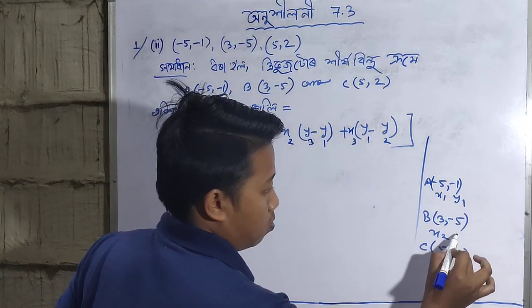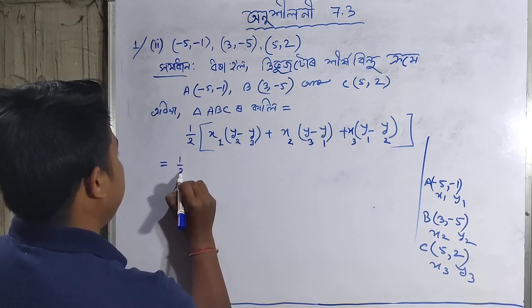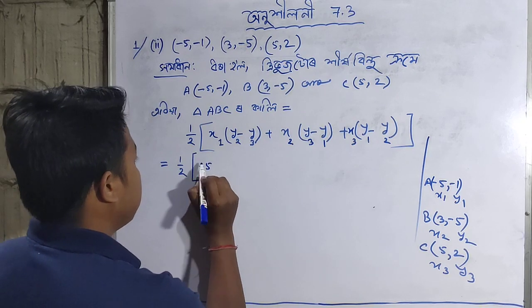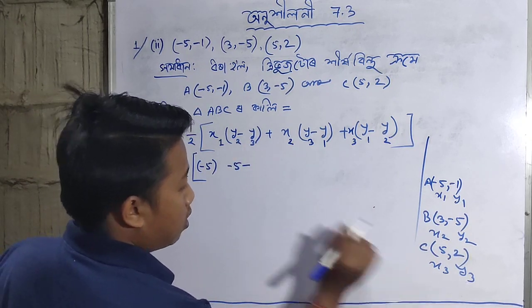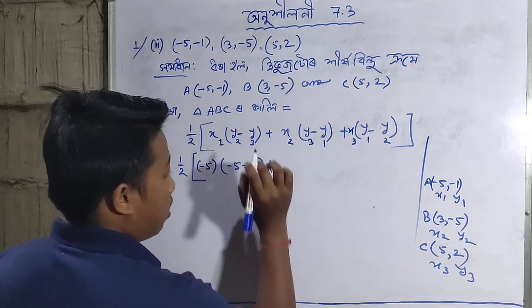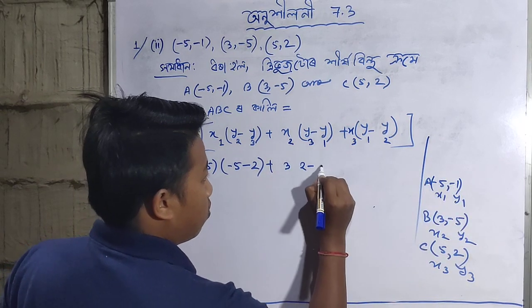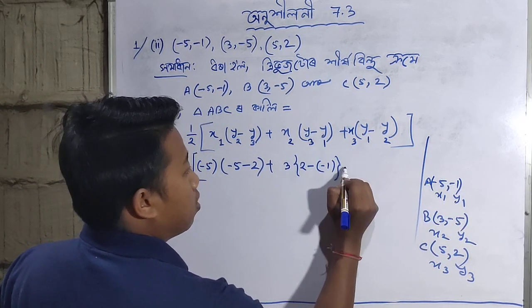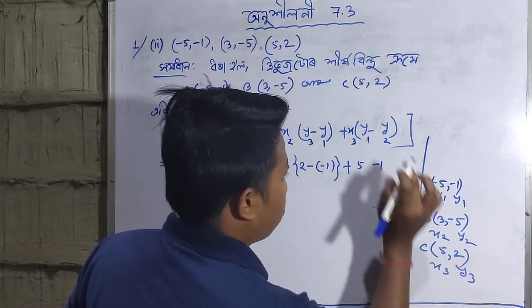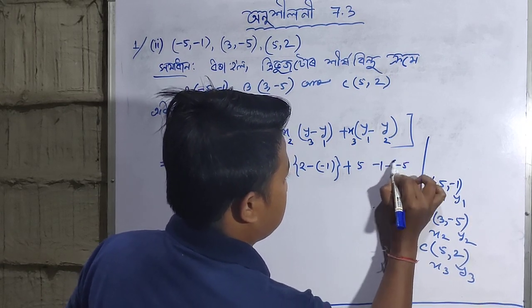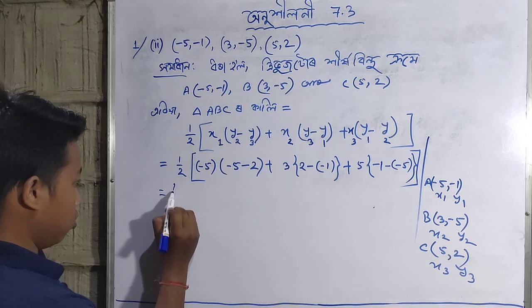Now substituting into the formula: one half times [x1(y2-y3) + x2(y3-y1) + x3(y1-y2)]. That gives us one half times [(-5)(-5-2) + 3(2-(-1)) + 5((-1)-(-5))]. Let me calculate each term.